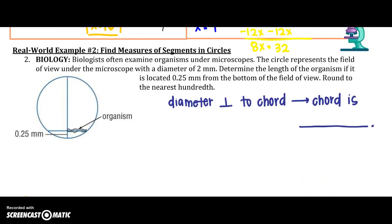Alright. A real world example. Find the measures of the segments in our circle. So, biologists often examine organisms under a microscope. The circle represents the field of view under the microscope with a diameter of 2 millimeters. Determine the length of the organism if it is located 0.25 millimeters from the bottom of the field of view round to the nearest hundredth. So, we were given the diameter of 2 millimeters.